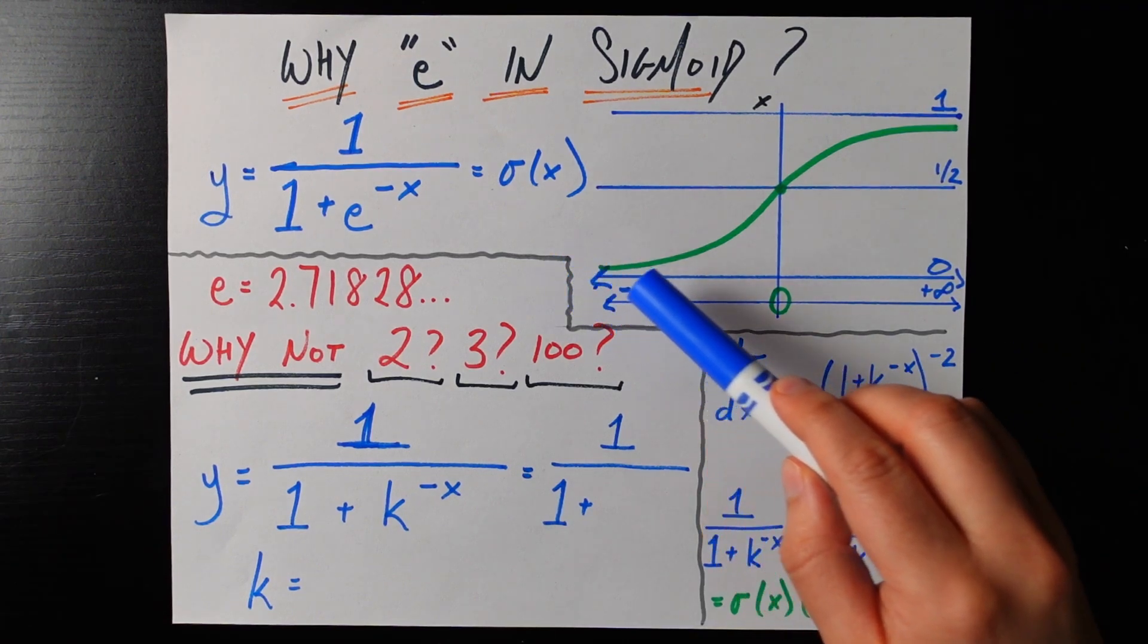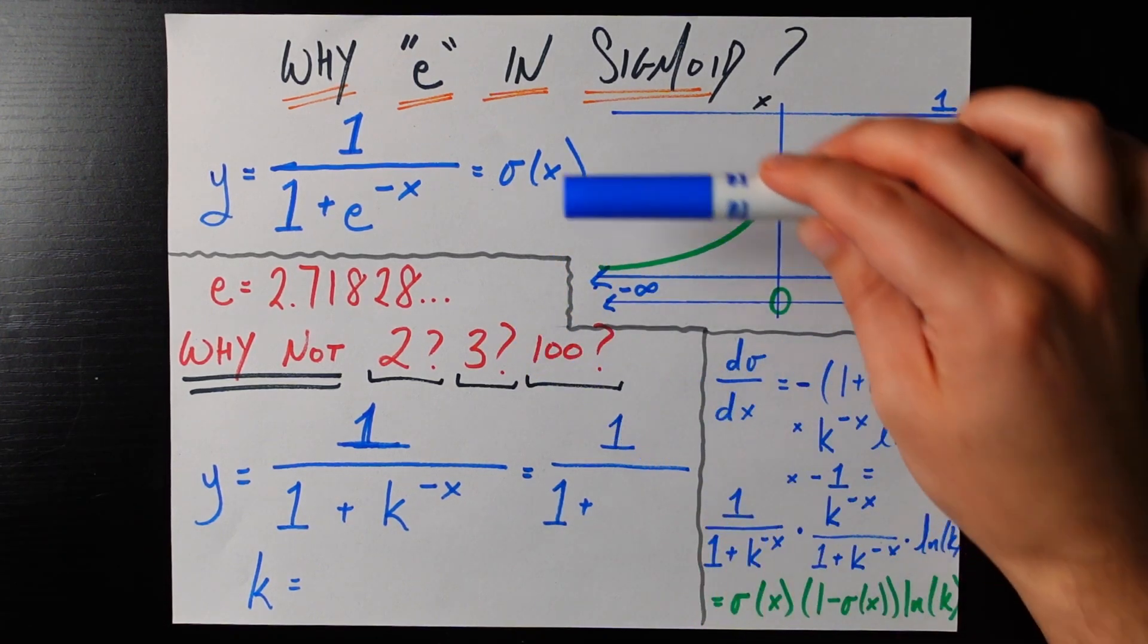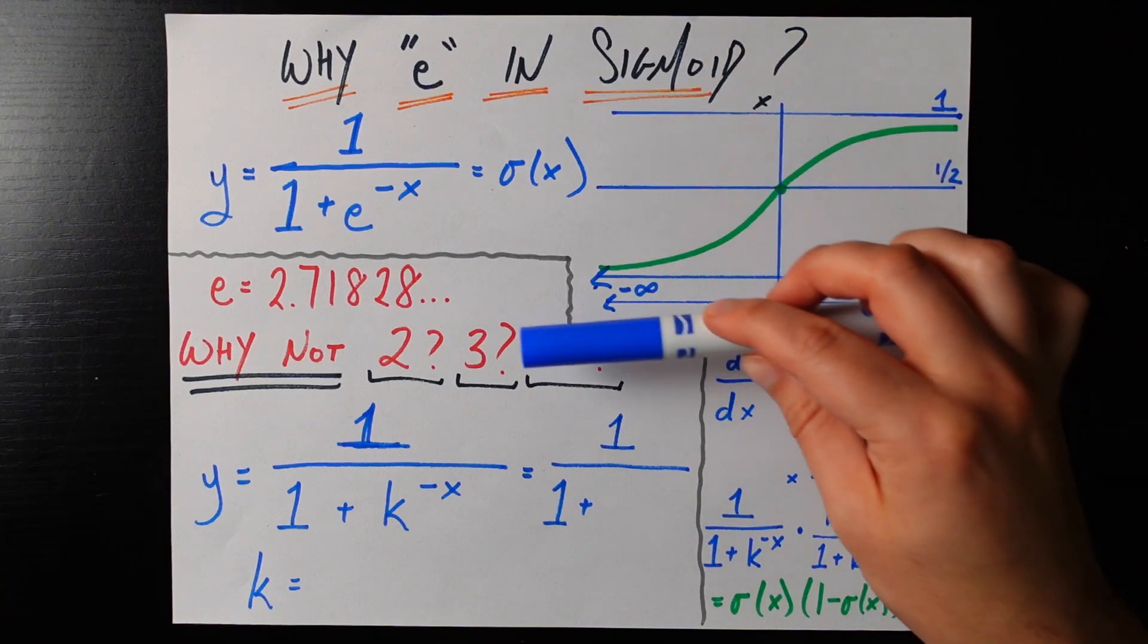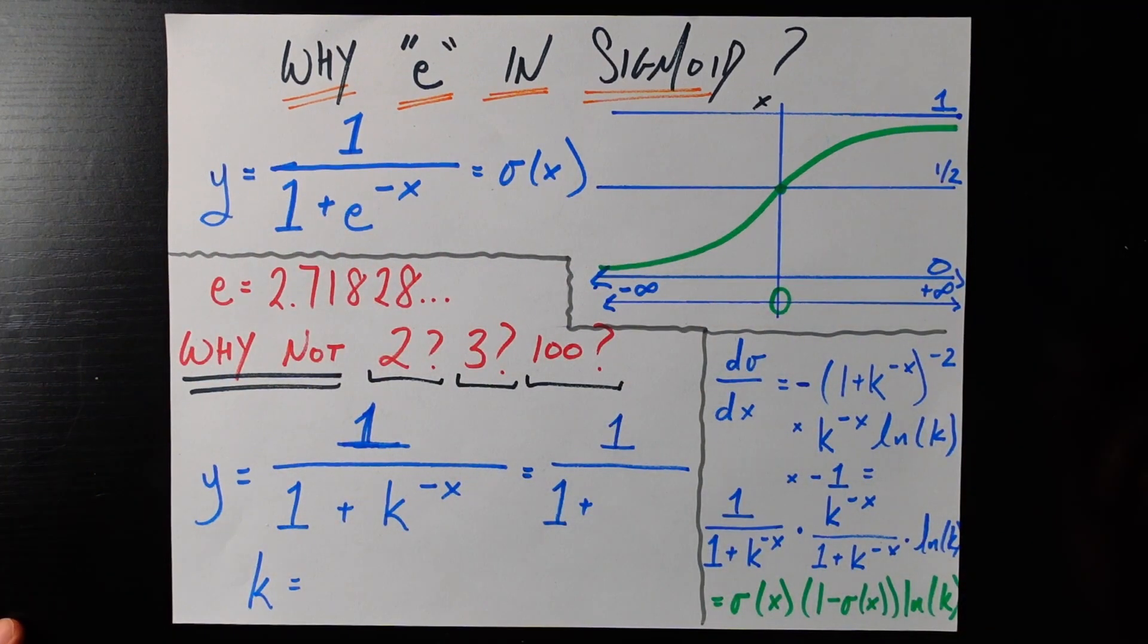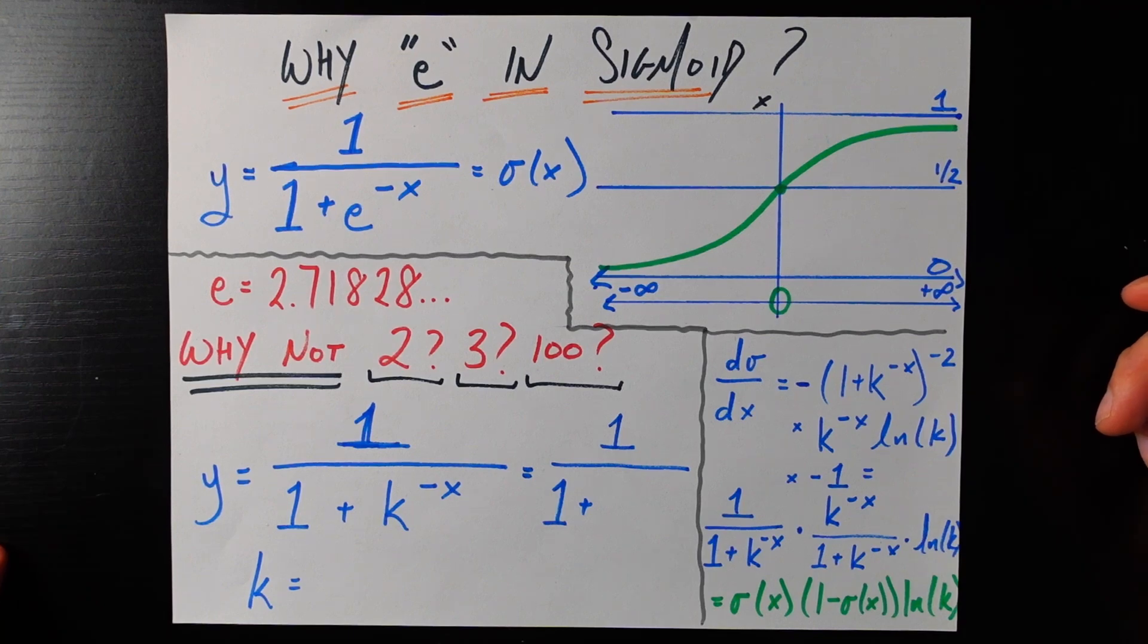And we know it as this very nice s-curve where it caps out at one on the top, caps out at zero on the bottom, the value at zero is equal to exactly a half and it's symmetric, it's very nice, it lets us squash these inputs between zero and one, letting us interpret things as probabilities and also having other nice characteristics.